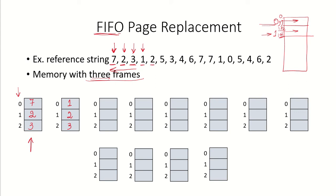There is a reference to page 2. Page 2 is already in memory, so this is a hit — not a page fault. Then there is a reference to page 5. Pages currently in memory are 1, 2, and 3. Page 5 is not there, so this is a page fault. Looking at which of pages 1, 2, and 3 was brought in earliest, we can see that page 2 was brought in first. So page 2 will be replaced, and the new memory status is pages 1, 5, and 3.